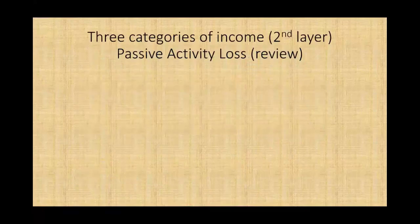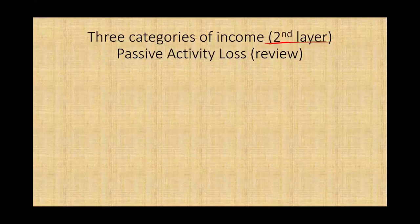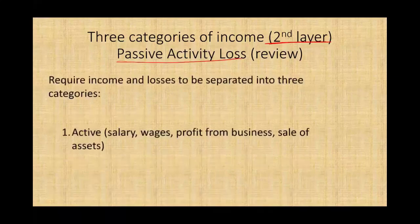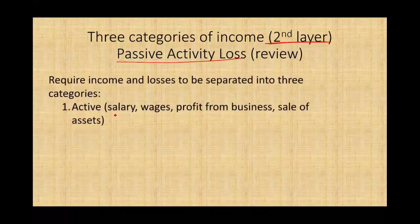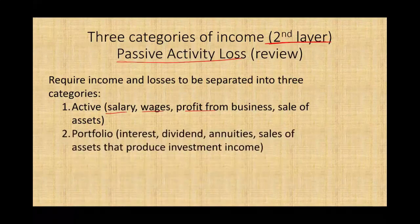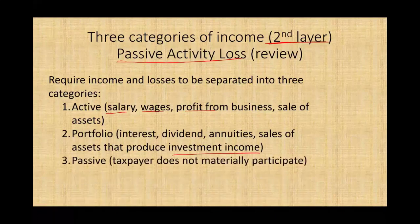Let's do a quick review. From the prior session, the second layer that Congress introduced to combat tax sheltering is the passive activity determination. What is the passive activity loss? Basically, what they did is they broke income into three categories: active income — which includes salaries, wages, profit from business, and sale of assets of a business — portfolio income, such as interest income, dividend, annuities, and sales of assets that produce investment income, and the third category, which is passive.